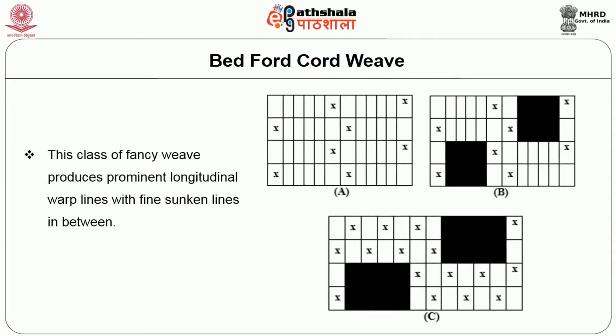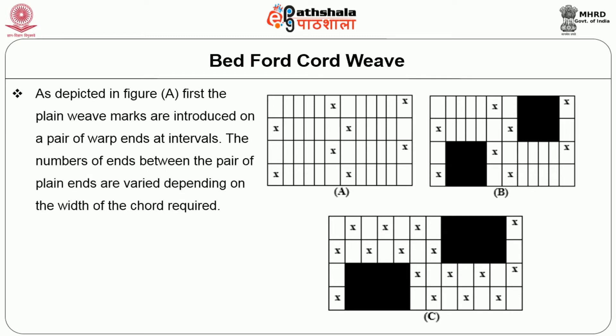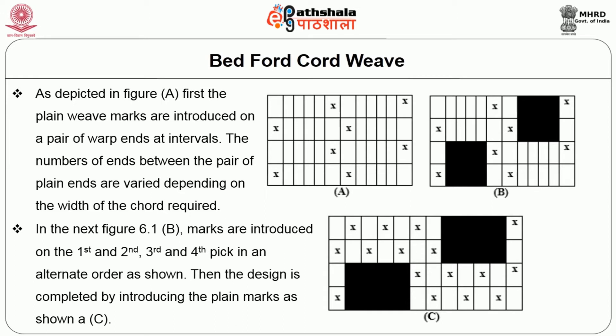Bedford Cord weave produces prominent longitudinal warp lines with fine sunken lines in between. The method of constructing ordinary Bedford Cord weaves is illustrated in figure 6.1 A to C, with the full weave repeating on 12 ends and 4 picks. First, plain weave marks are introduced on a pair of warp ends at intervals, with the number of ends between the plain ends varied depending on the width of the cord required. Marks are then introduced on the 1st, 2nd, 3rd and 4th picks alternately, and the design is completed by introducing the plain marks as shown at C.